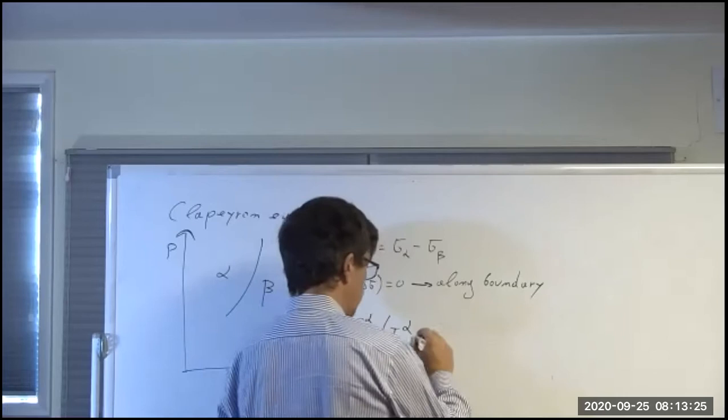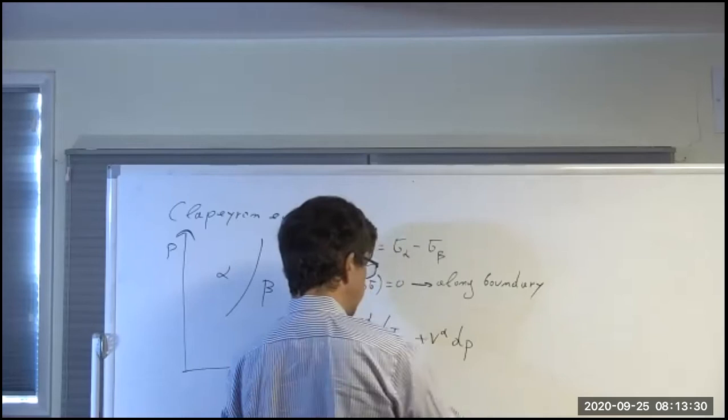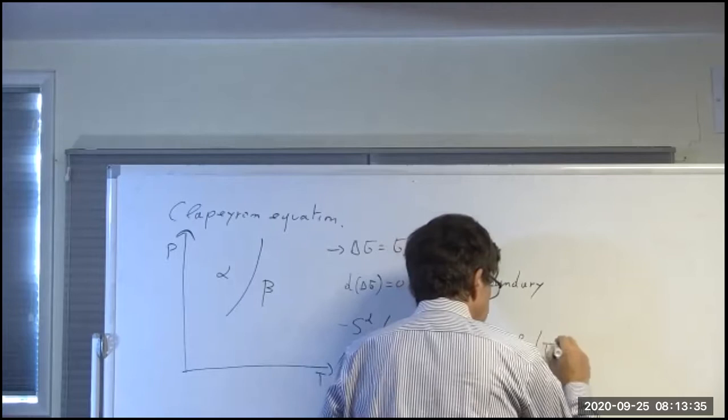Writing this out, along the boundary: minus s_alpha dT plus v_alpha dP equals minus s_beta dT plus v_beta dP.